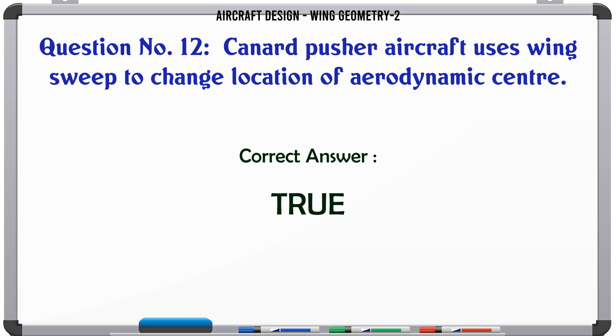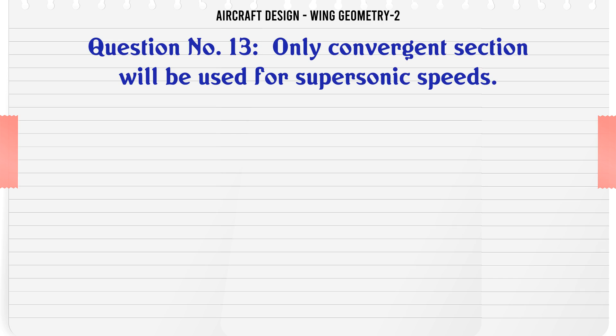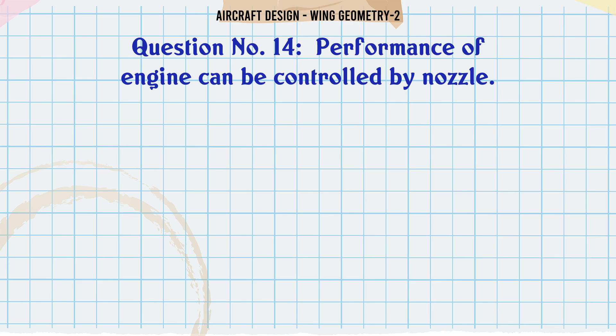Only convergent section will be used for supersonic speeds. A: True, B: False. The correct answer is True. Performance of engine can be controlled by nozzle. A: True, B: False. The correct answer is True.